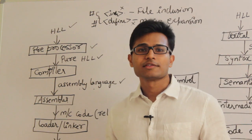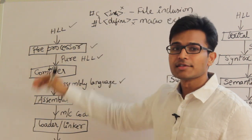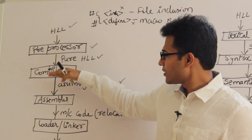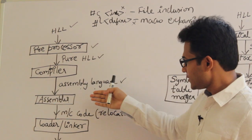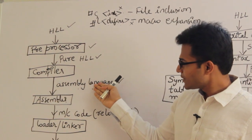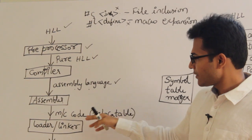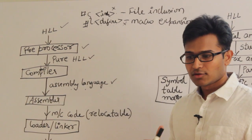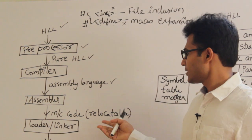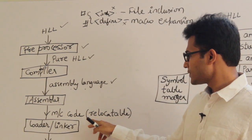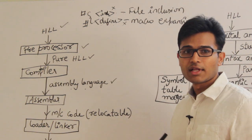Previously, long back, people used to write programs in assembly language too, and later they came to high-level language. Before compilers, they always used to have assemblers. Once the assembler takes the assembly language, it is going to convert the assembly language into machine code. Machine code is zeros and ones. But there are two types of machine codes: relocatable machine code and absolute machine code.